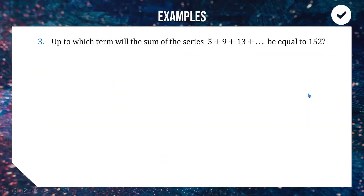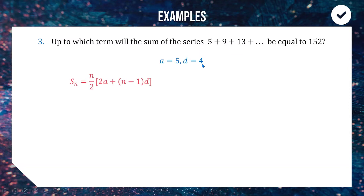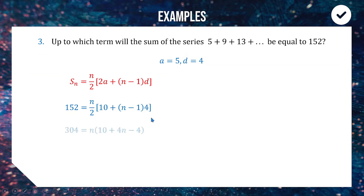For the next question: up to which term will the sum of the series 5 + 9 + 13 + … equal 152? This time we know the answer is 152 and want to find n. Our starting value is a = 5, common difference d = 4. Using the sum formula, the left-hand side is 152; we know a and d but not n — that is the goal of this question.